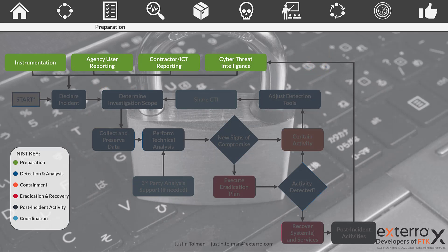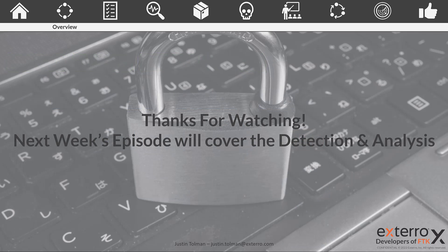Those points are an overview of the preparation phase of the CISA Incident Response Playbook. Again, this should be happening before the breach. Of course, as breaches happen, this will adjust the way that you prepare for the next one. These documents, procedures, plans, hierarchies, and training should be an ever-evolving process based on the cyber threat intelligence landscape at the time. For more information, you can reference the Incident and Vulnerability Response Playbook published by CISA. Next week, we'll be moving on to the detection and analysis phase. Thanks for watching.